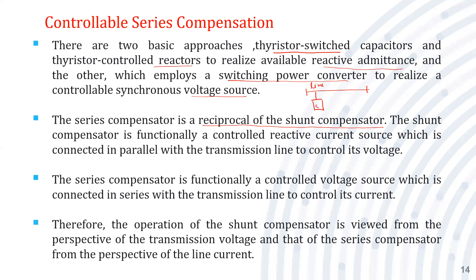The shunt compensator injects current — specifically inductive current — at the point where it is connected. It may be a midpoint shunt compensation or load compensation on a radial line. The shunt compensator is a functionally controlled reactive current source connected in parallel with the transmission line to control its voltage, maintaining voltage from the sending end to the receiving end.